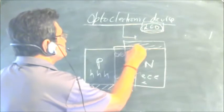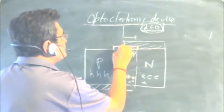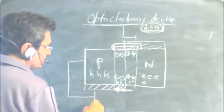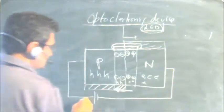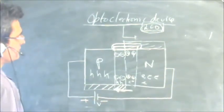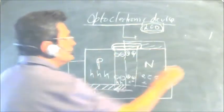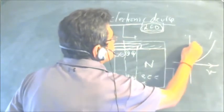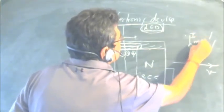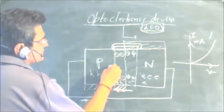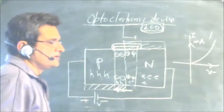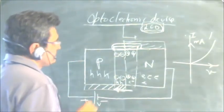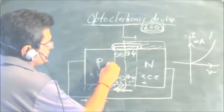In the case of the LED, the depletion region is provided with a transparent casing when it is manufactured. When we give it a forward bias — meaning positive is connected to P and negative is connected to N — the forward bias voltage causes current to flow. When the forward bias is increased, remember that in forward bias the current is due to majority carriers, whereas in reverse bias the current is due to minority carriers.